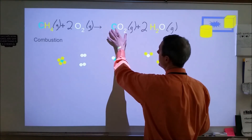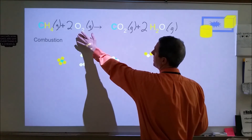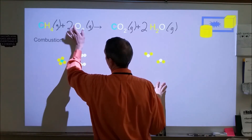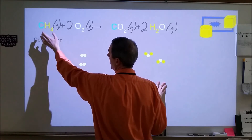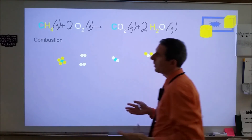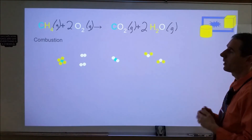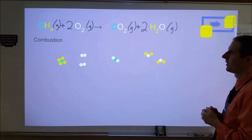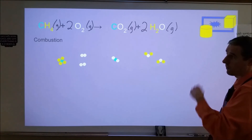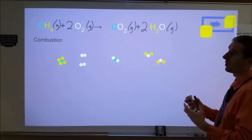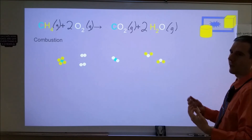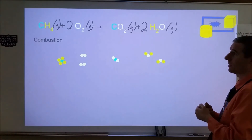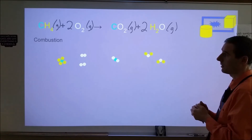Because combustion involves neutral molecular compounds, we're not doing charge-based subscript constraints. Whenever we have sufficient oxygen, a hydrocarbon will always form CO₂ and H₂O as products. This makes it more straightforward in some respects, though you still need to be instructed on exactly what's expected for a given problem.